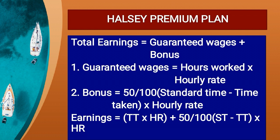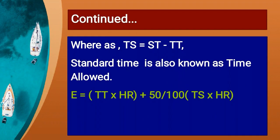The time saved is calculated. If you work faster than standard, you earn a minimum wage plus a 50% bonus on the time saved. Time taken multiplied by hourly rate, plus 50 divided by 100, multiplied by time saved, multiplied by hourly rate. Time saved equals standard time minus time taken.